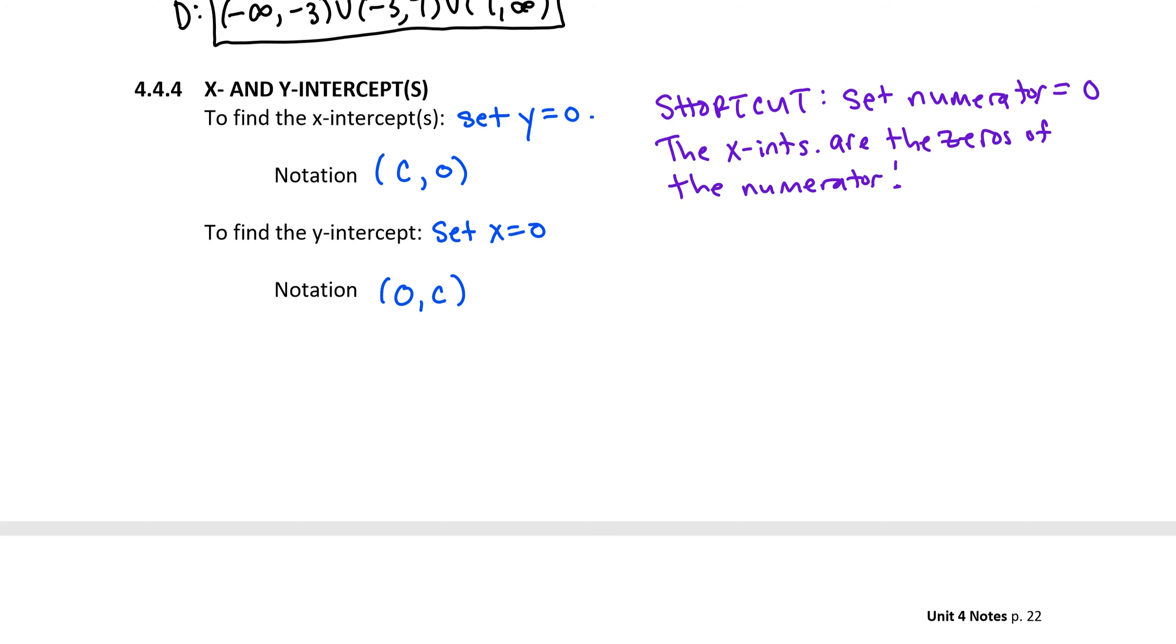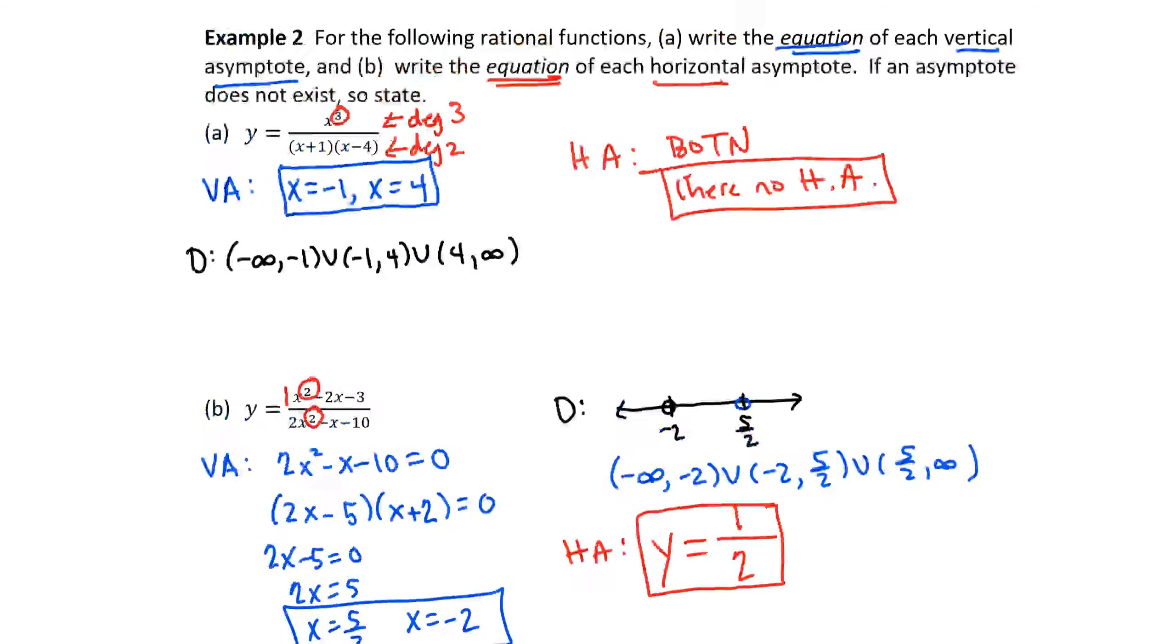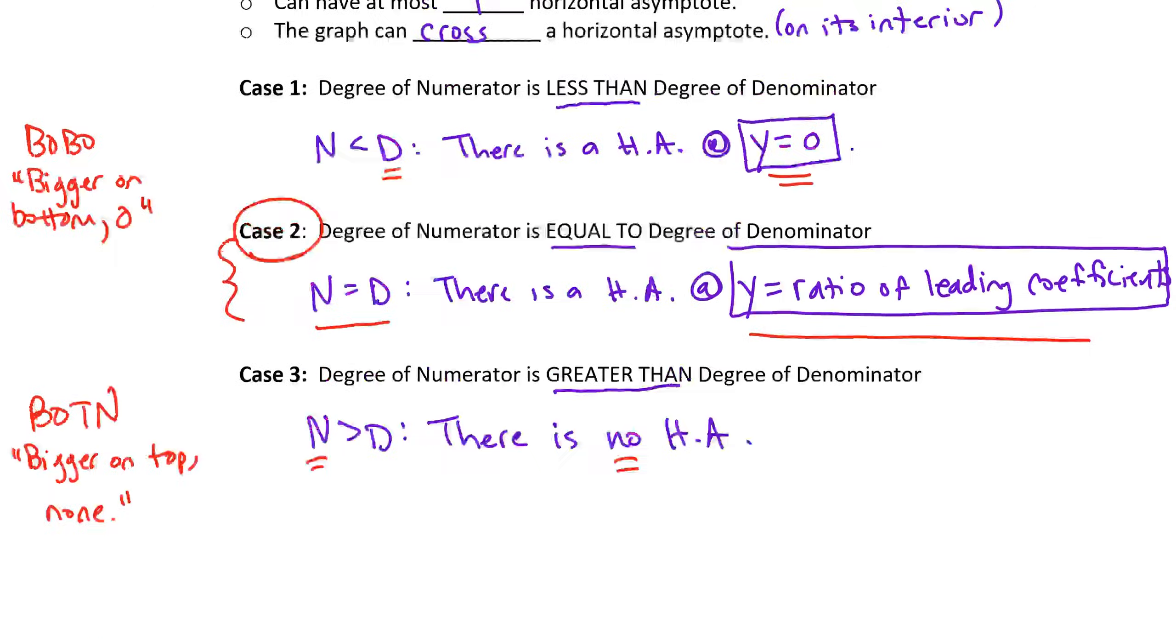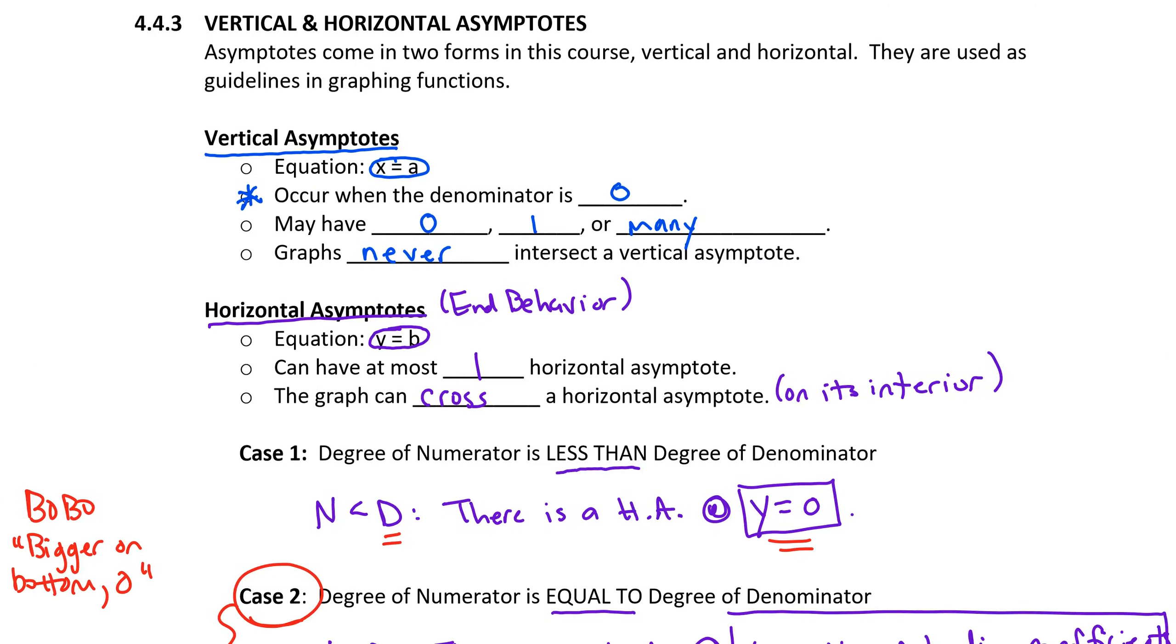Now, make sure you distinguish this from a vertical asymptote. Let's backtrack just to compare here so that we get everything straight. A vertical asymptote occurs where the denominator is 0. So when I set the denominator equal to 0, that not only gives me the restricted values to leave out of the domain, but it also gives me the locations of the vertical asymptotes, which I express in equation form x equal to a constant.